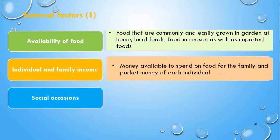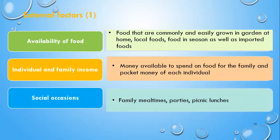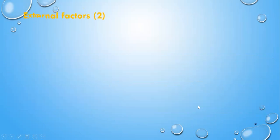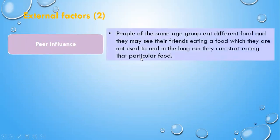We also have social occasions and peer influence, such as family meal times, parties, and picnic lunches. Peer influence means that people of the same age group eat different foods, and they may see their friends eating a food which they are not used to, and in the long run they can start eating that particular food.